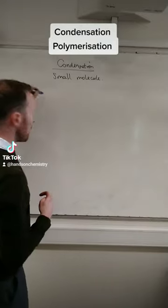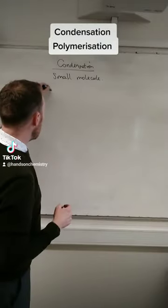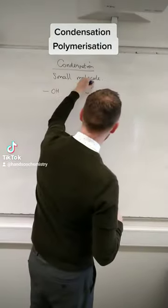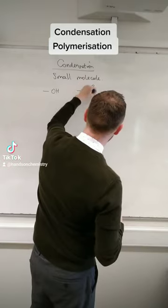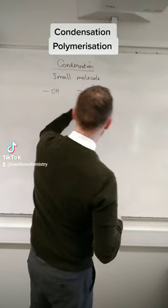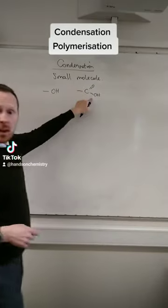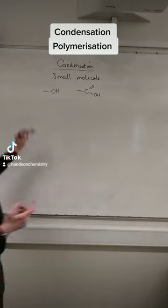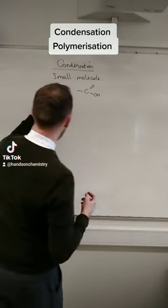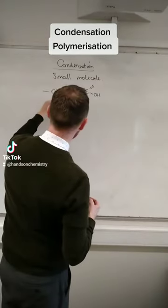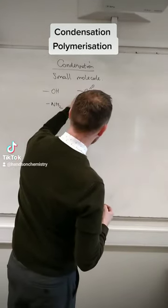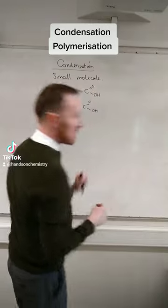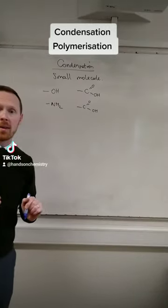So you're always looking for, in a molecule, if it's got an OH and a C double bond OH — so carboxylic acid and alcohol — you're going to get polyesters. If it's got an amine group and a carboxylic acid, you're going to get amides — polyamides.